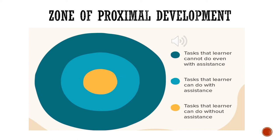The next section, in lighter teal, is tasks that a learner can do with assistance — for example, putting toys away, getting dressed, or brushing their teeth. The last section is tasks that a learner can do without assistance, which is really the goal of any developmental theory: we want students to eventually be autonomous and independent. As you can see on this image, it's the smallest of all the circles, meaning most children need some sort of assistance to be successful completing tasks.